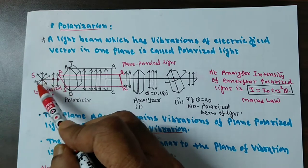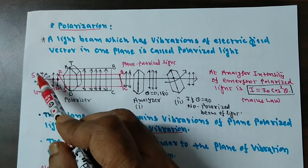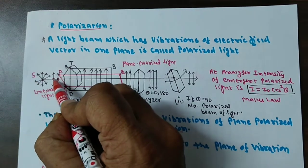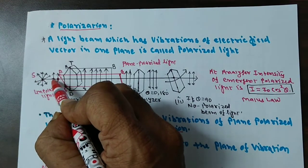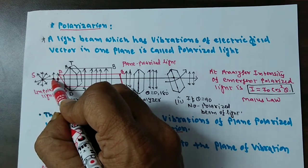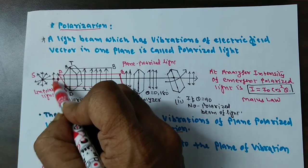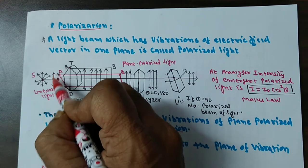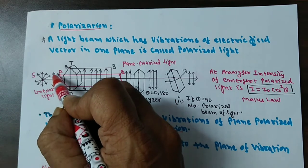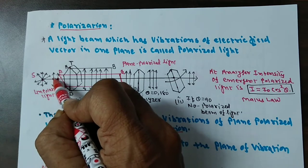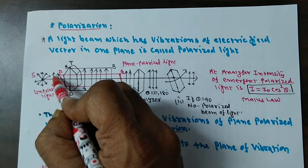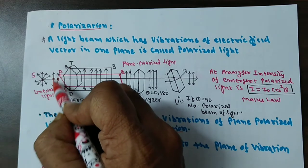You can see here, vibrations of the electric field are in all directions. This can be represented by a dot for vibration perpendicular to the plane of paper, and an arrow for vibration parallel to the plane of paper. These are superposed on each other. This type of light is called unpolarized light.